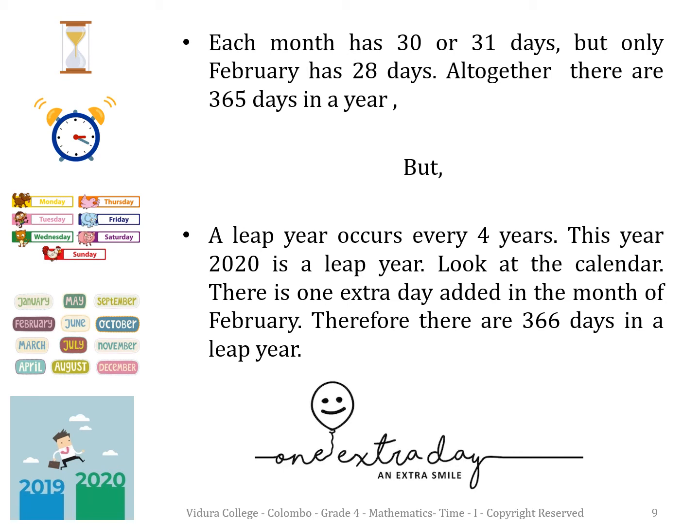Children, each month has 30 or 31 days. But only February has 28 days. Altogether, there are 365 days in a year. But a leap year occurs every four years. This year, 2020, is a leap year. Look at the calendar — there is one extra day added in the month of February. Therefore, there are 366 days in a leap year.